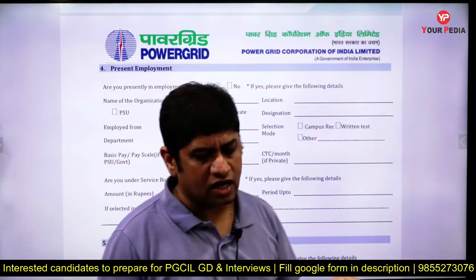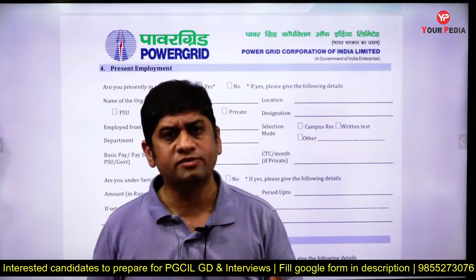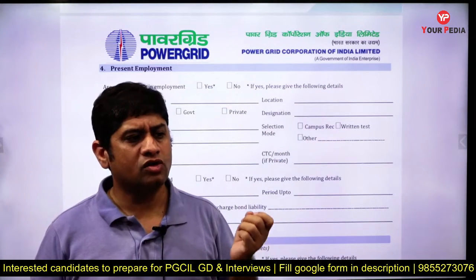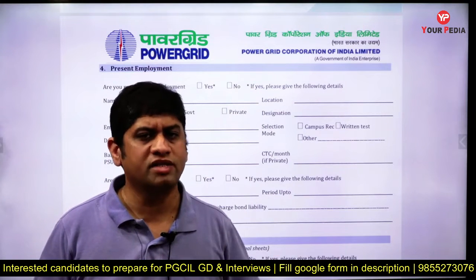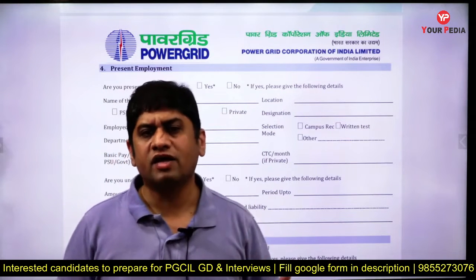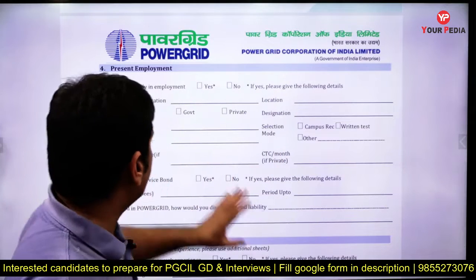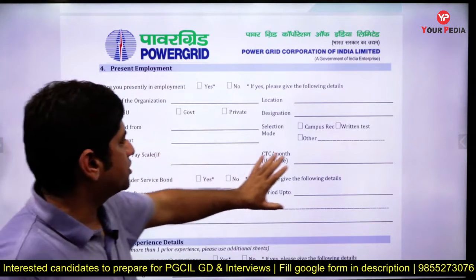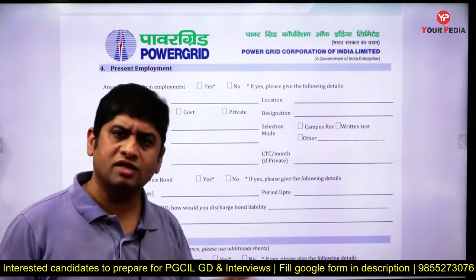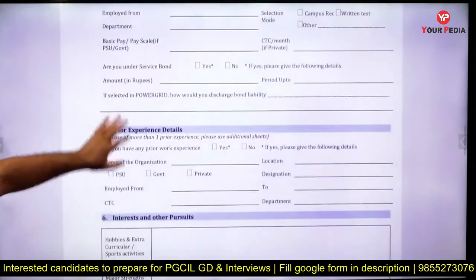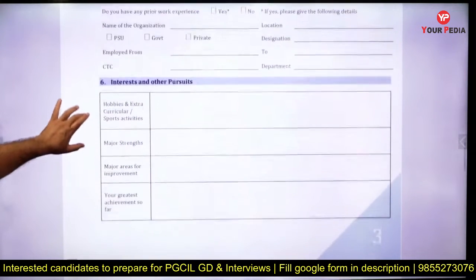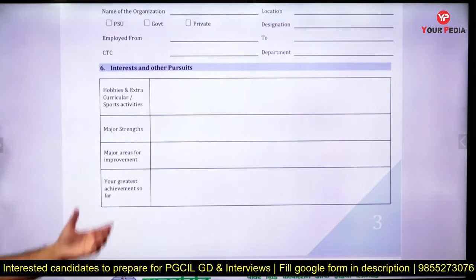This is the employment details section. Many students say they are working in a private organization and may not get a No Objection Certificate. For Power Grid and government or public sector, they do not normally want an NOC from a private organization. Some students ask whether to mention a job done for only four months — you should mention it. Write in detail what you have done there; don't worry about what they will say about you leaving the job.